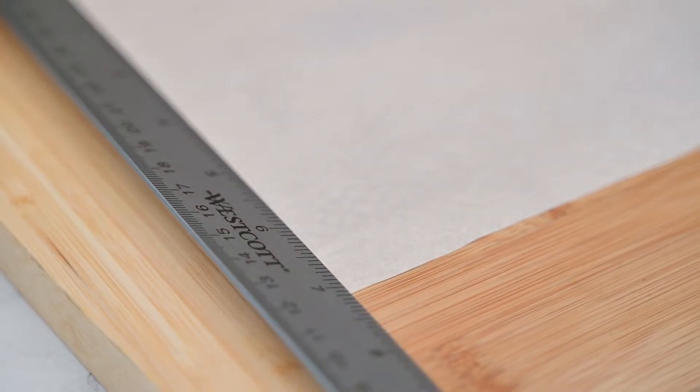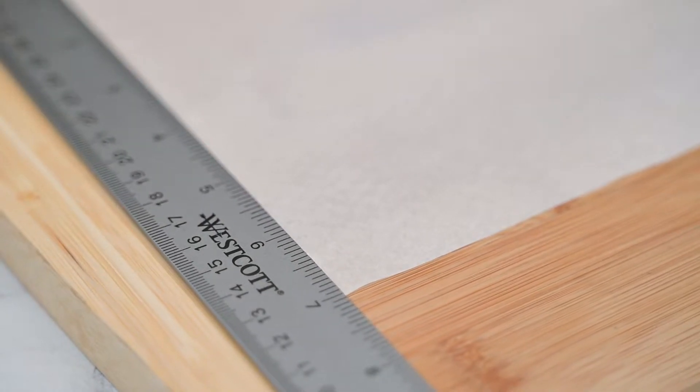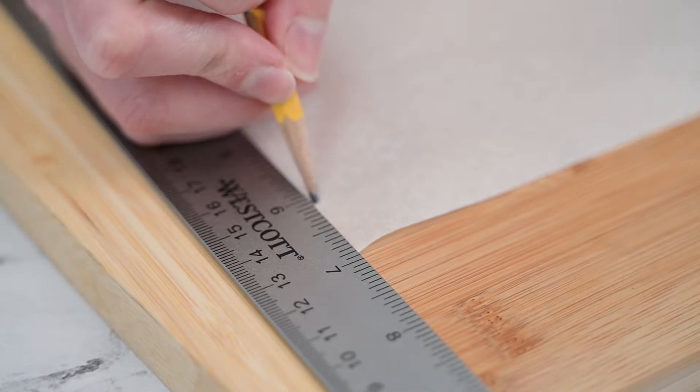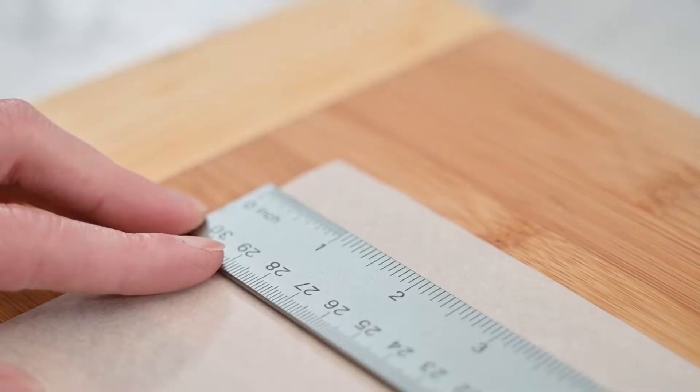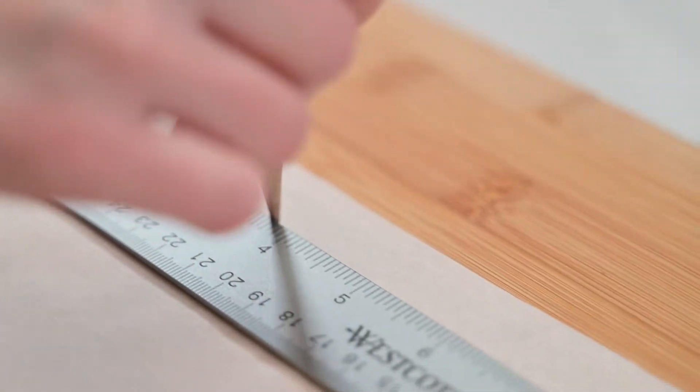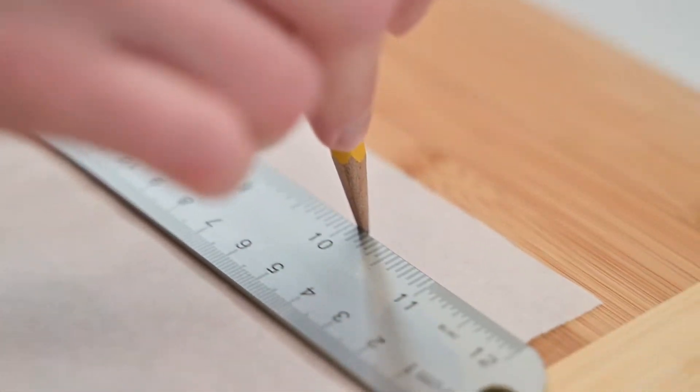Cut off a piece of parchment paper from the roll and using a ruler, measure five or six inches. Six-by-six-inch muffin liners work best for large muffins and cupcakes, and five-by-five-inch liners work best for medium-sized muffins and cupcakes.